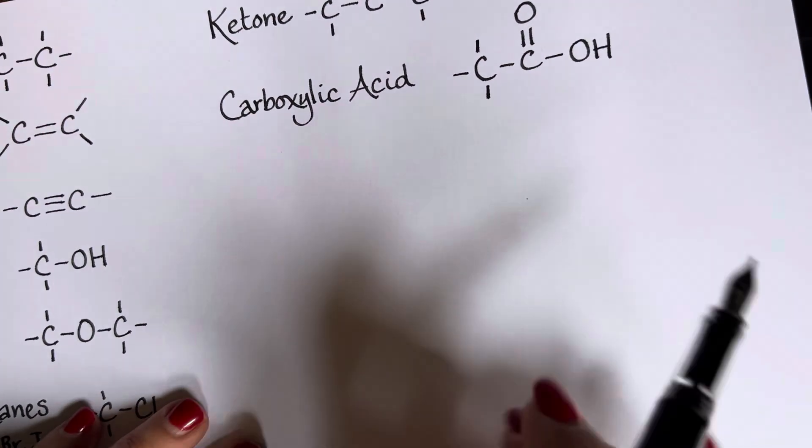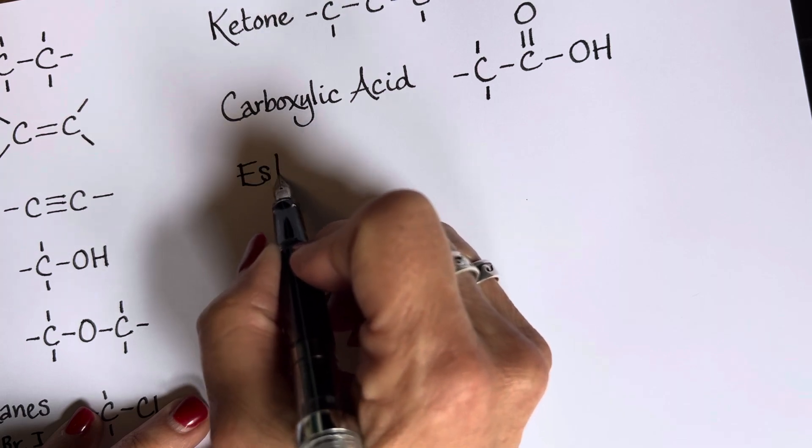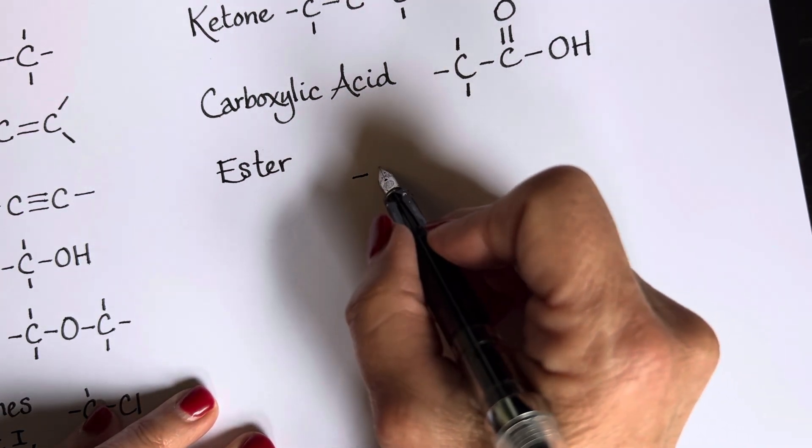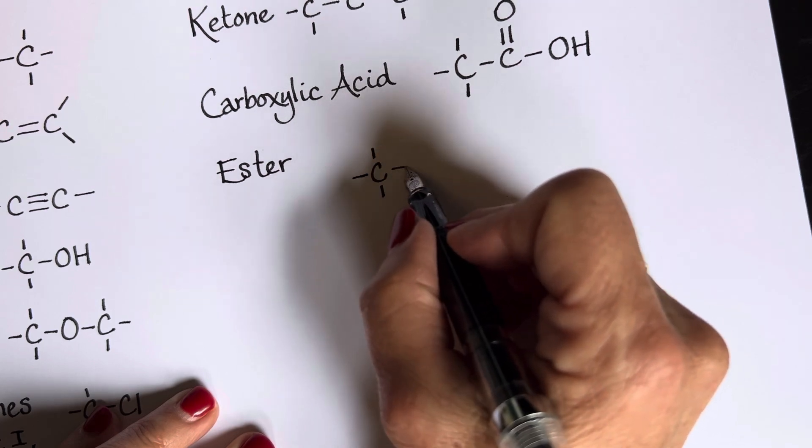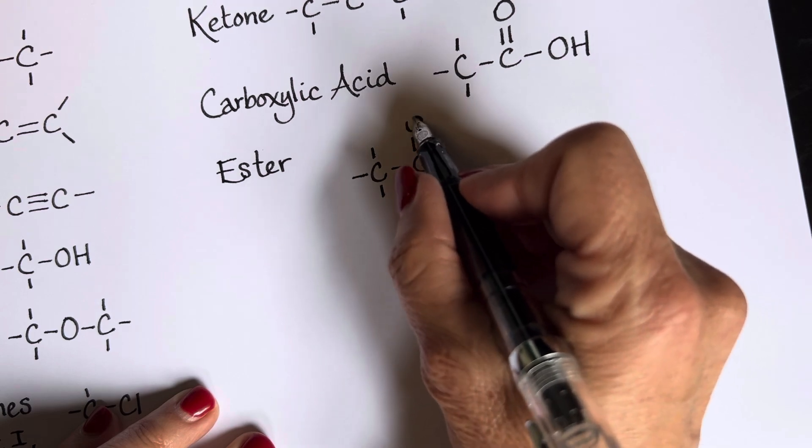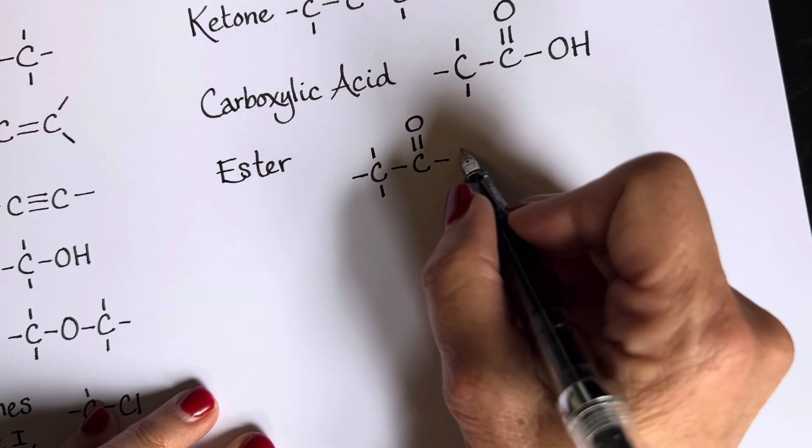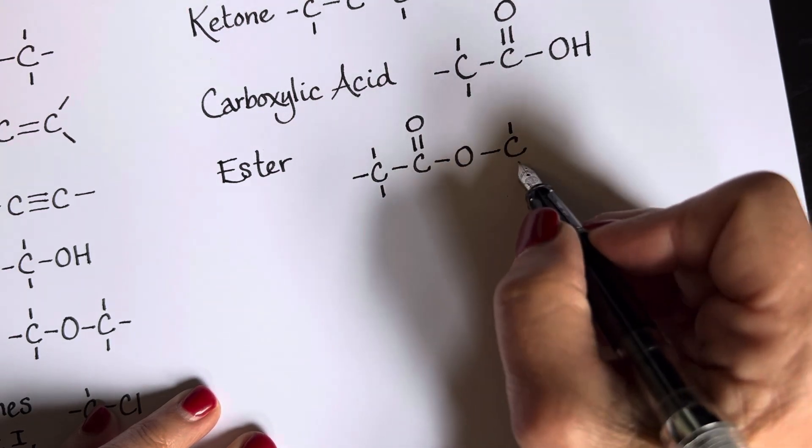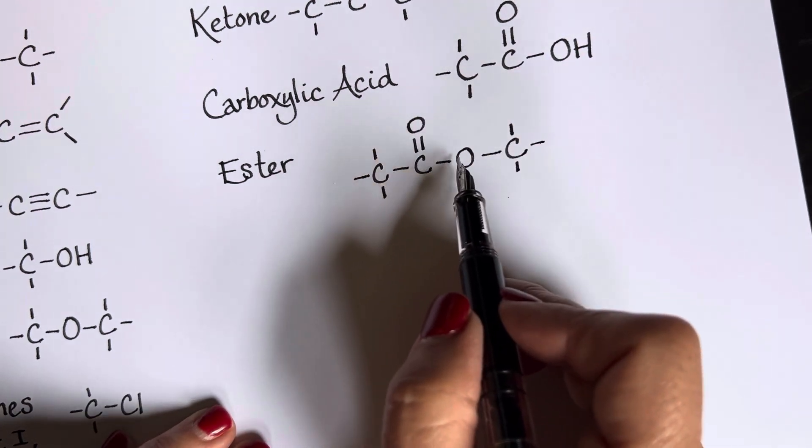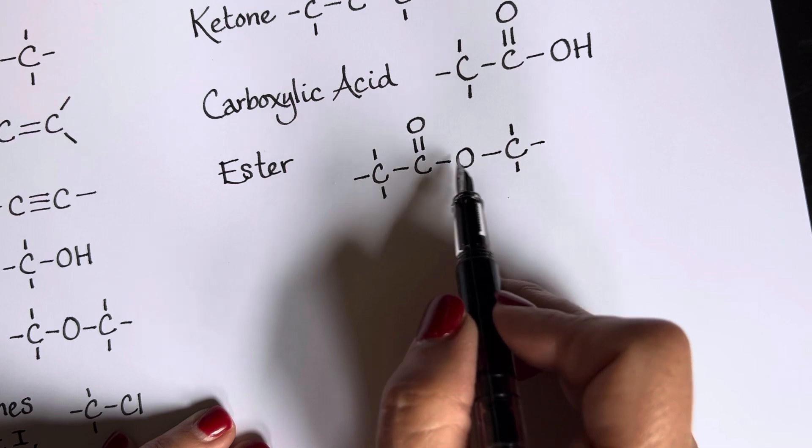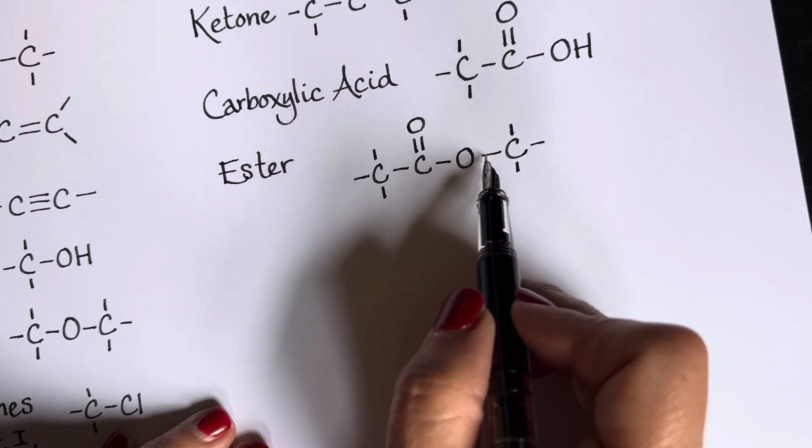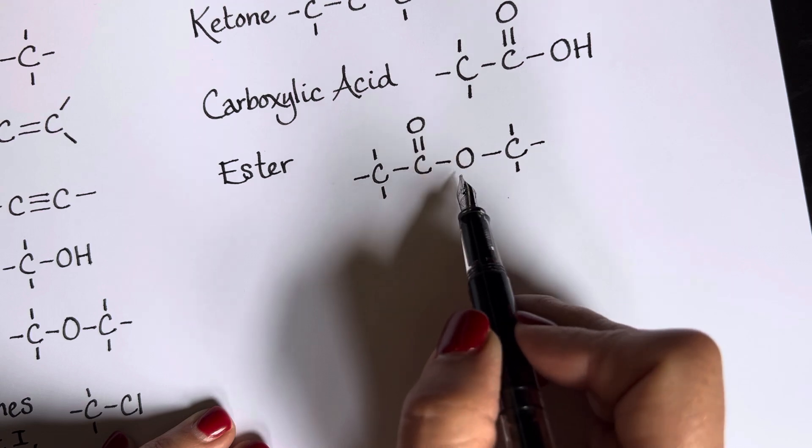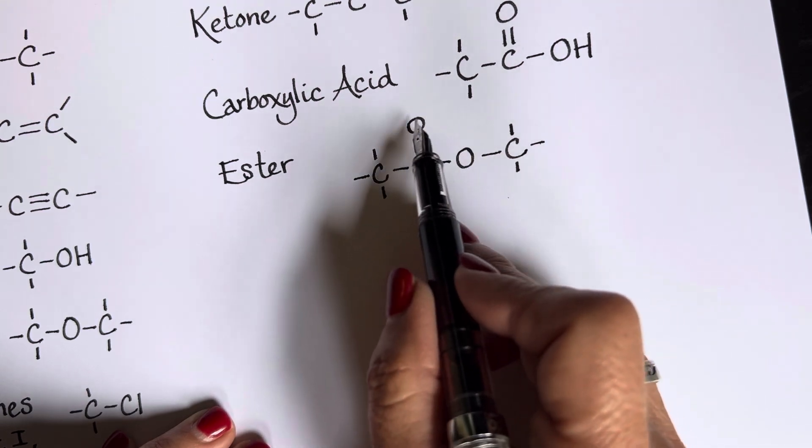Let's look at next, an ester. An ester, once again, we are seeing a combination of functional groups we have seen before. So we have C double bond O. We've seen that before. And then we've also seen the case where we have this oxygen sandwich, right? That we saw with the ether earlier. But now we have them next to each other. We've got C double bond O, and we've got this single bond of oxygen which is bonded to a carbon. Again, I'm just gonna remind you this oxygen does have two lone pairs on it. There's our ester.